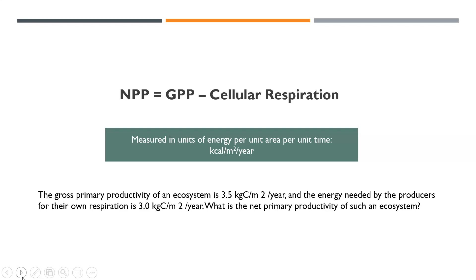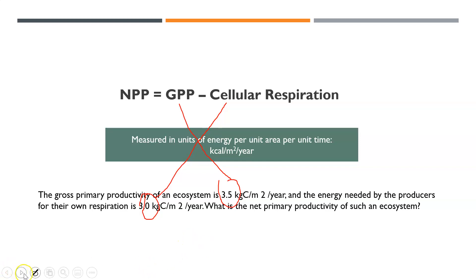This is measured in units of energy per unit area per unit time — for example, kilocalories per meter squared per year, or grams of carbon per meter squared per year. Here's an example: the gross primary productivity of an ecosystem is 3.5 kilograms of carbon per meter squared per year, and the energy needed by the producers for their own respiration is 3 kilograms per meter squared per year. Setting up the equation, NPP = GPP minus cellular respiration: 3.5 minus 3 gives us 0.5 kilograms of carbon per meter squared per year.